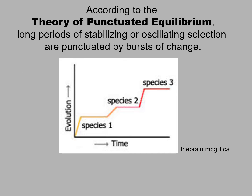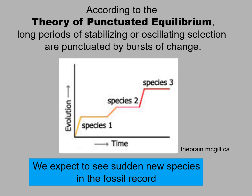But a second theory has been proposed — the theory of punctuated equilibrium, where you have long periods of stabilizing or oscillating selection punctuated by bursts of change. Following this model, you expect to see sudden new species in the fossil record, not gradual changes. These are not either-or — gradualism versus punctuated equilibrium — but they both occur at different times during the evolution of humans, or either one.